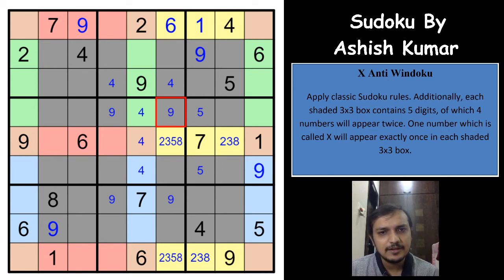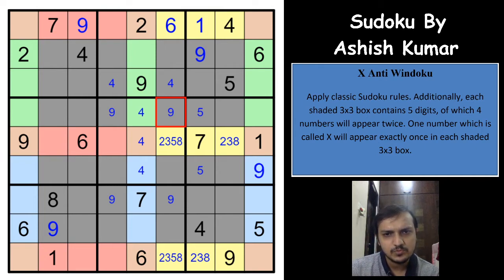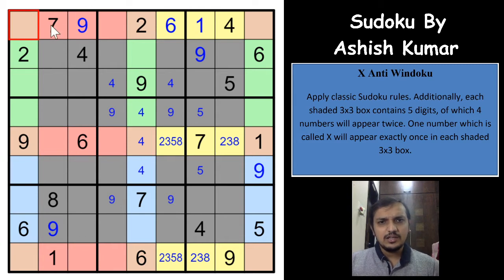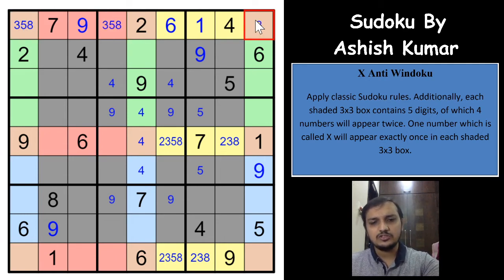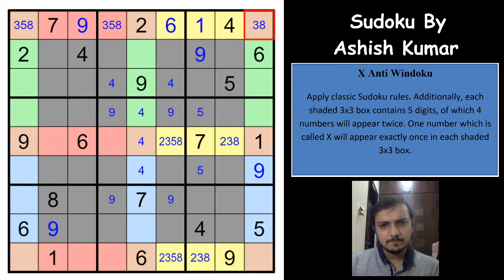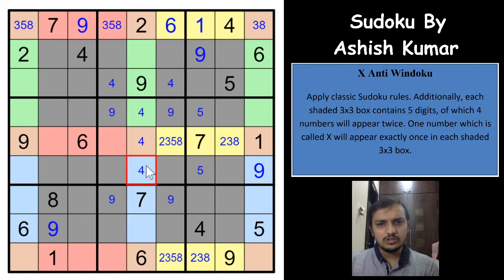Where can 2 be on the blue region? A 2 cannot be in these 2 cells because of the 2 here, and you have only 1 cell remaining for the 2 — so that has to be a 2. Where can 4 be in the 9th column? A 4 cannot be here or here, so a 4 has to go here. The 3 remaining digits are 3, 8, and 7 in any order. In this box, a 2 has to be in one of these 2 cells.